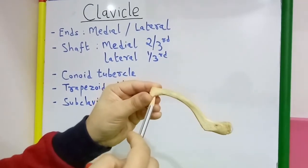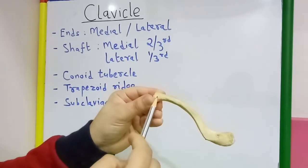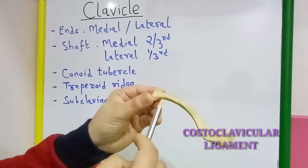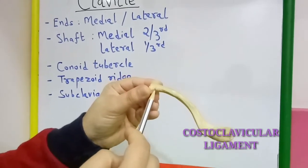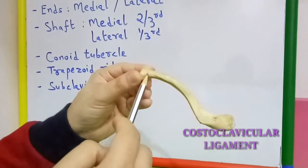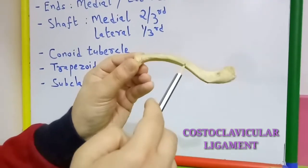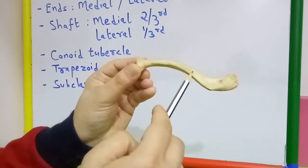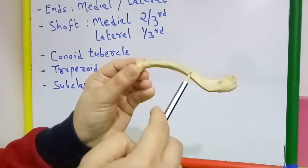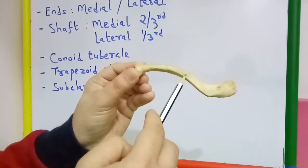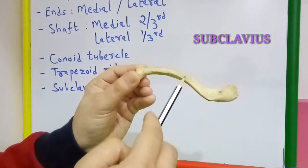On the medial end of the inferior surface there is attachment of the costoclavicular ligament, whereas the subclavian groove receives insertion of the subclavius muscle.